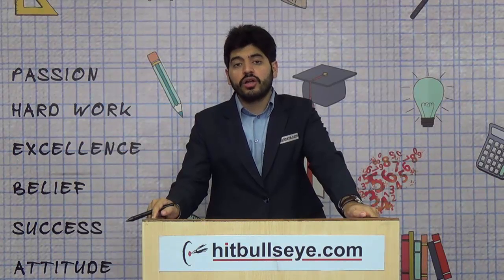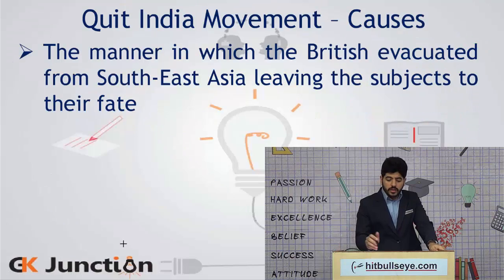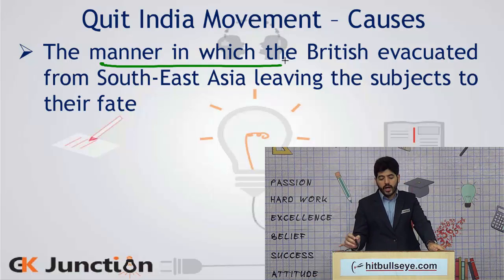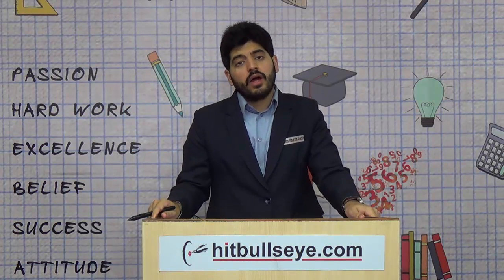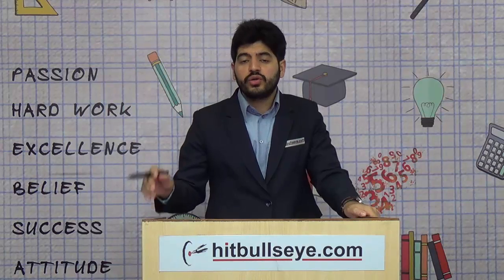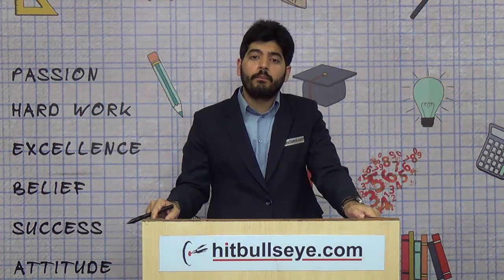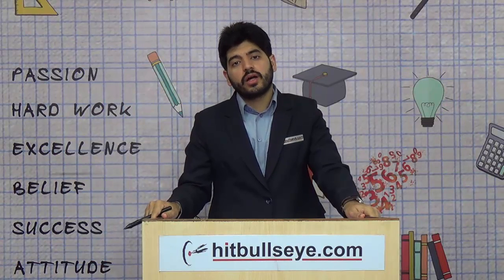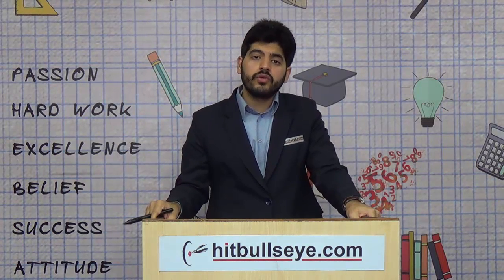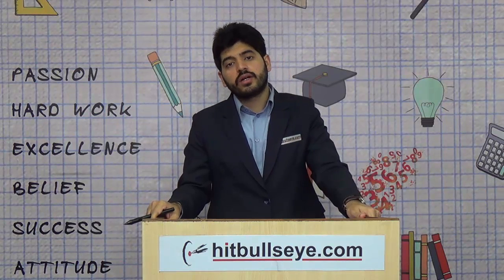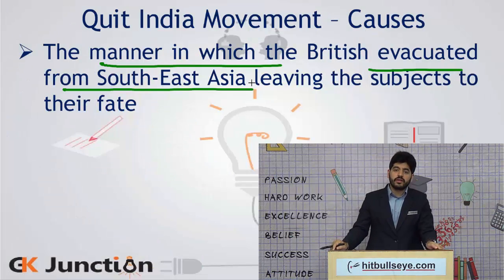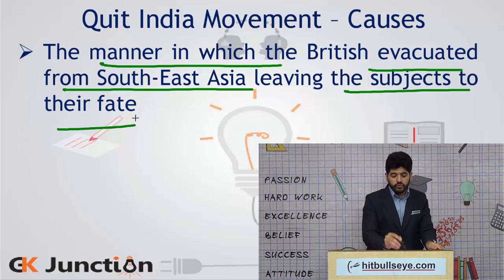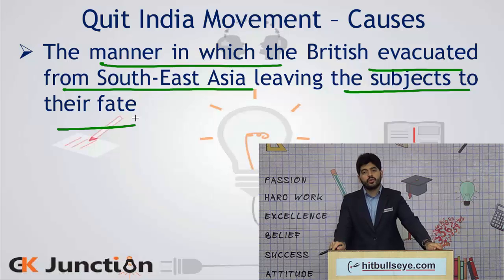It was widely believed that the British Empire was on the verge of collapse in World War II. Lastly, the manner in which the British evacuated themselves from Southeast Asia, leaving Indian subjects to their fate. The British had created a 'white road' for themselves which was free to use, while for Indians a 'black road' was created — overcrowded, making evacuation from war-torn areas very difficult — whereas the British evacuated easily. This left Indian subjects to their fate, leading to further discontent among the Indian masses.